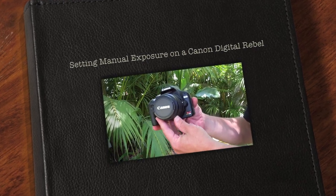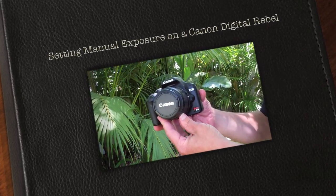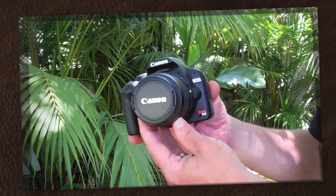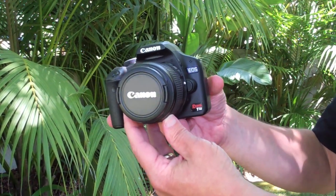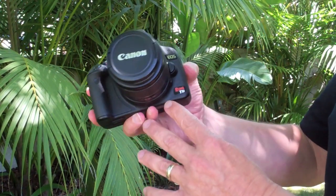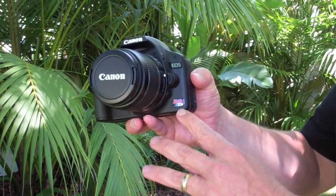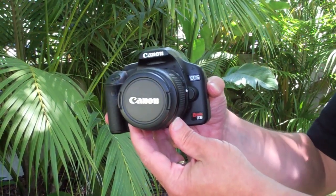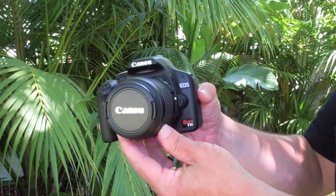Today we're going to look at how easy it is to set the exposure manually on a Canon digital SLR camera, in particular a Canon digital Rebel. We're going to be using a Rebel T1i today, but the procedure is almost identical for every one of the Canon digital Rebel cameras.